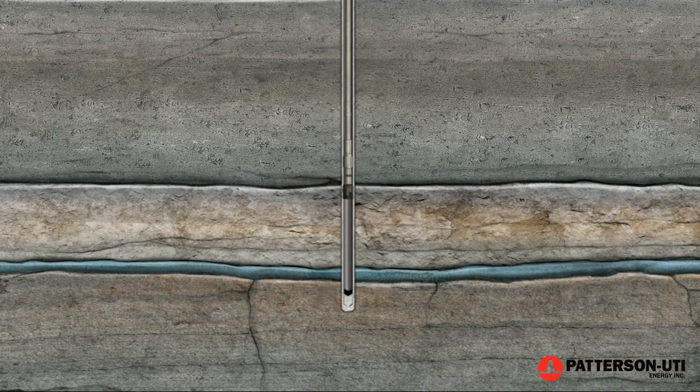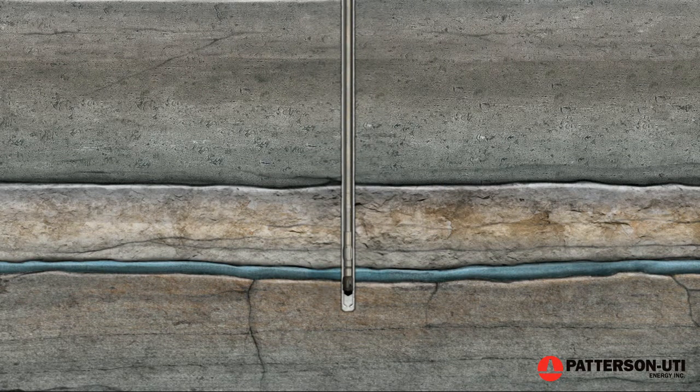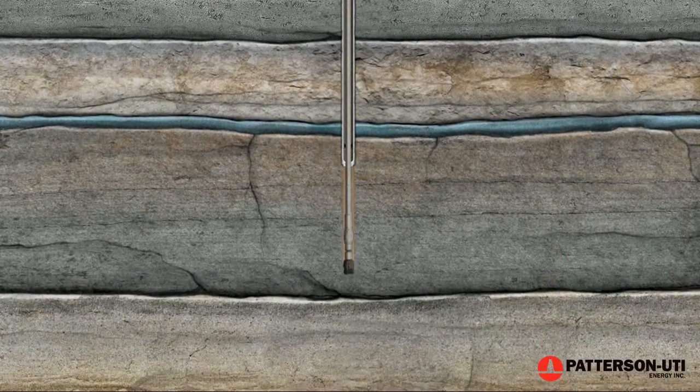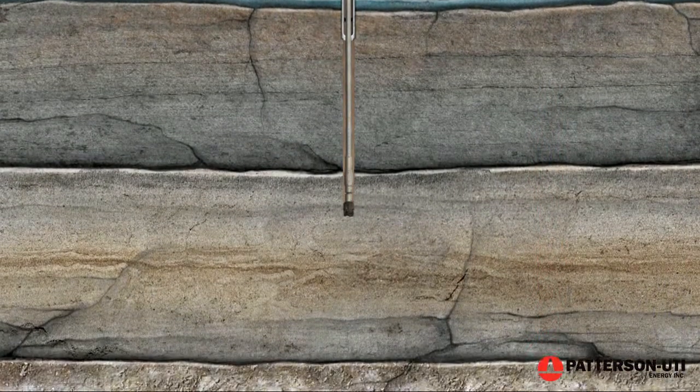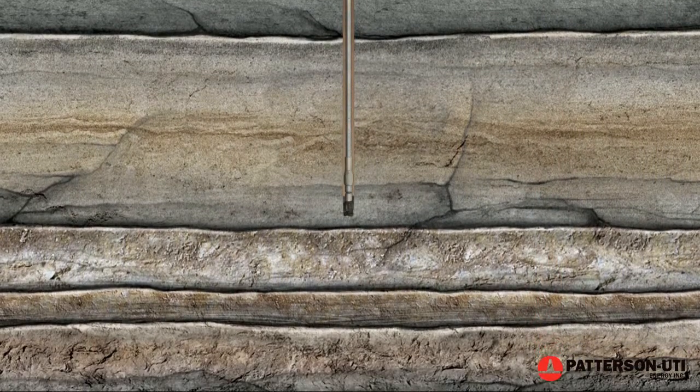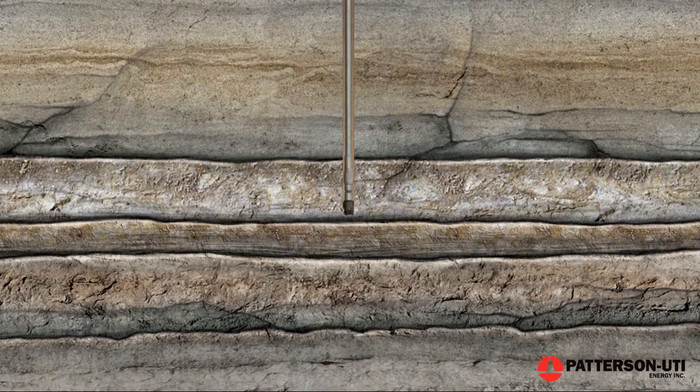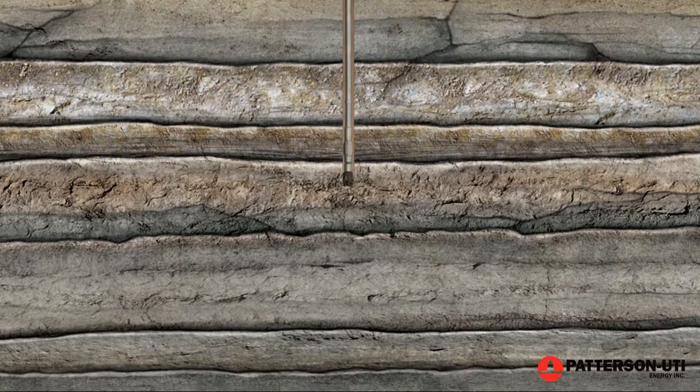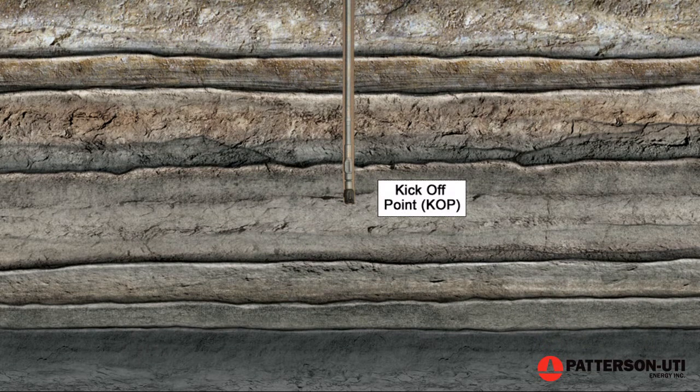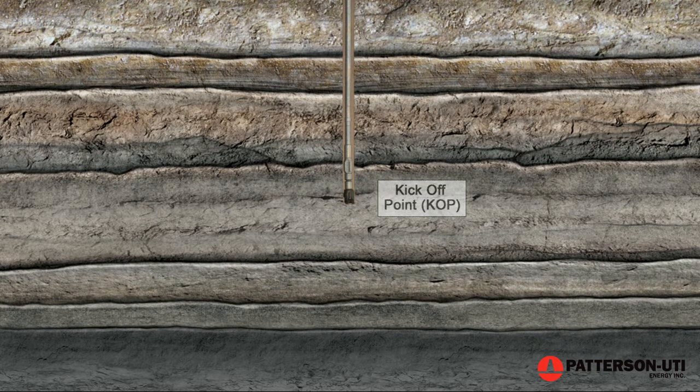The pipe and bit are lowered back down the hole to drill through the plug and cement and continue the vertical section of the well to approximately 500 feet above the planned horizontal leg. This depth is called the kickoff point, where the curve will begin so the horizontal section can be drilled. Up to this point, the process is the same as drilling a vertical well.